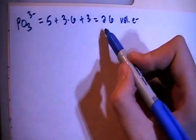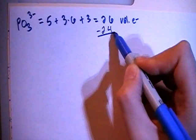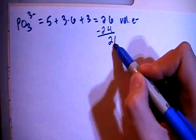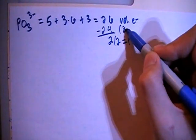Now we can go ahead and subtract out the largest multiple of 8 which is going to be 24. That leaves you with 2 electrons, divide that by 2 gives you 1 and 24 is equal to 8 times 3.